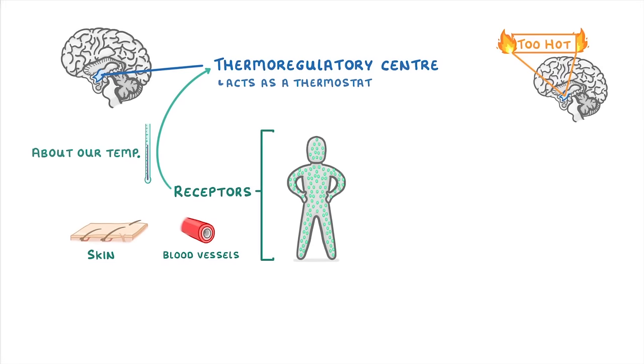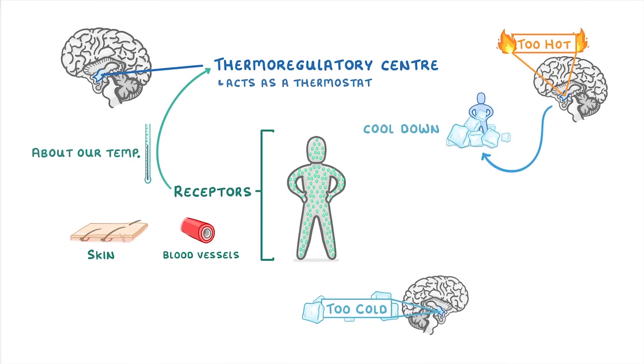And if it decides that we're too hot, then it will send out signals designed to cool us back down. Whereas if it detected that we were too cold, it would bring about changes that warm us back up.